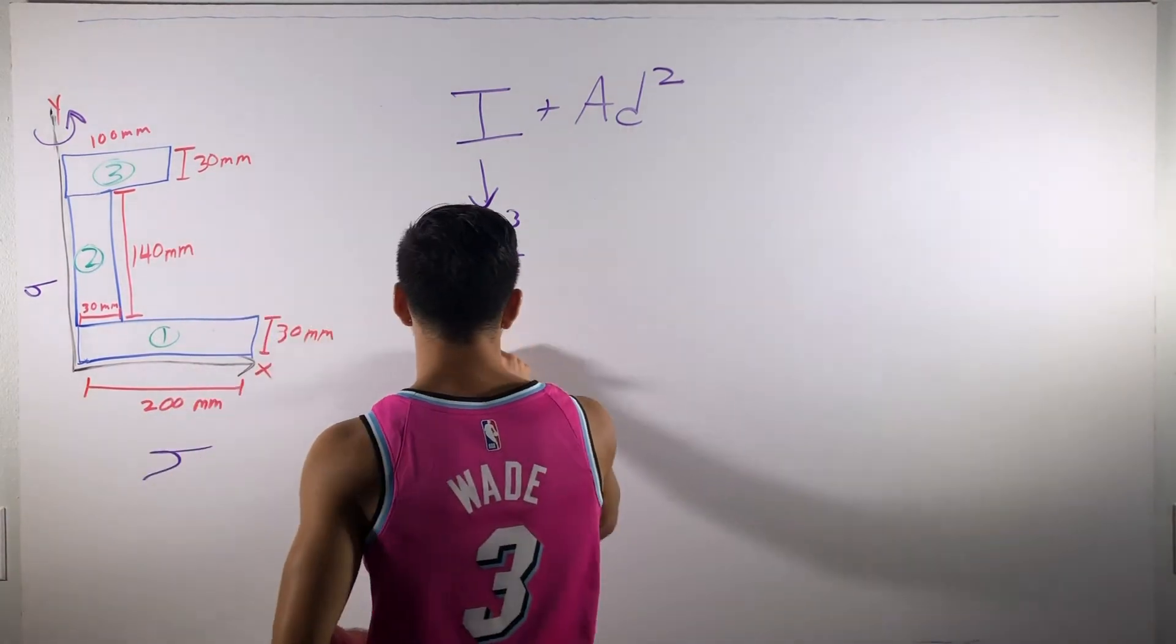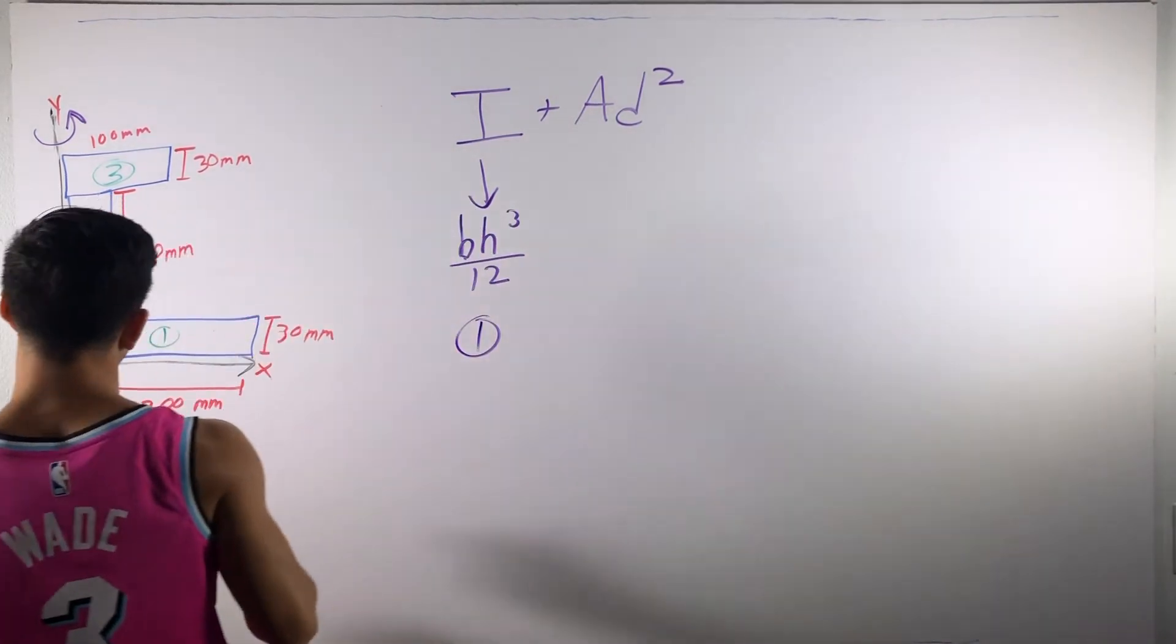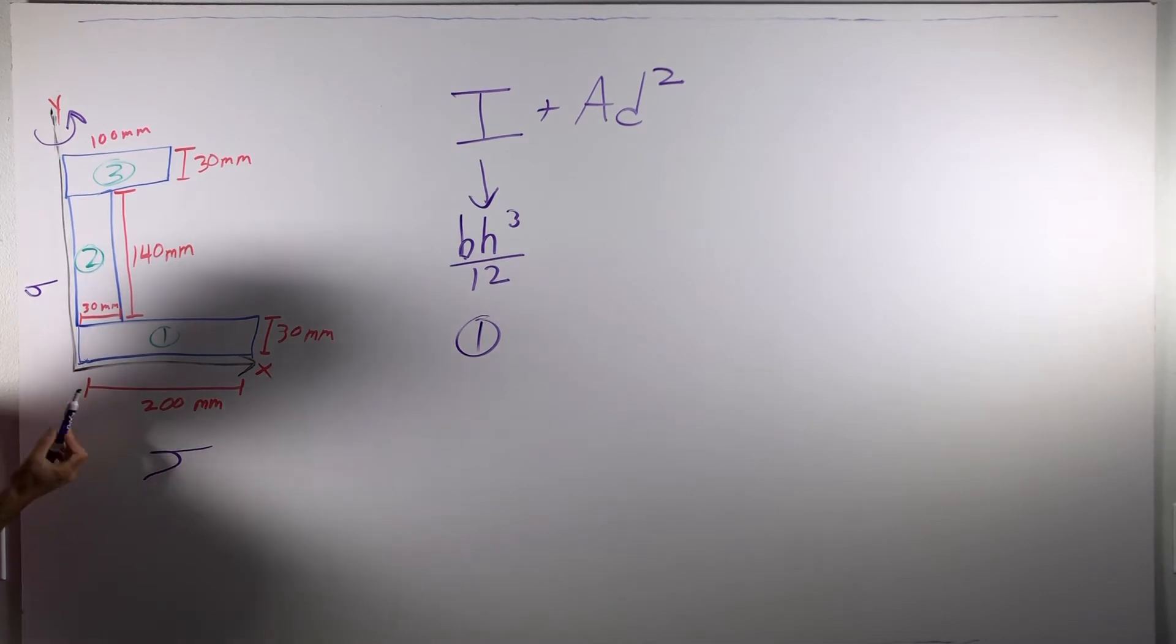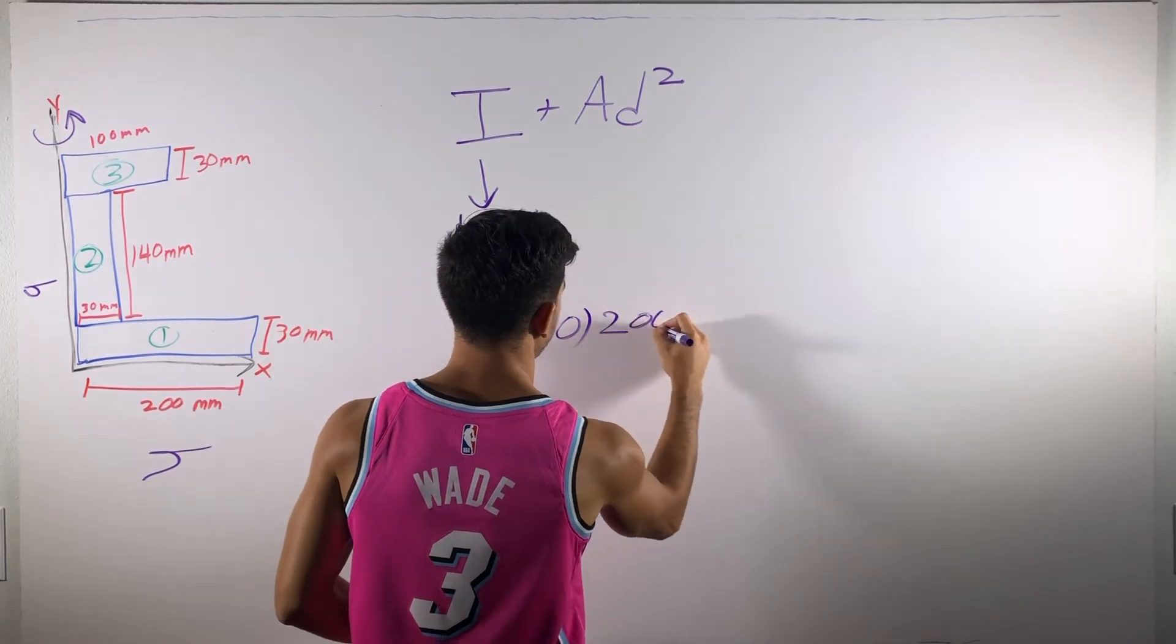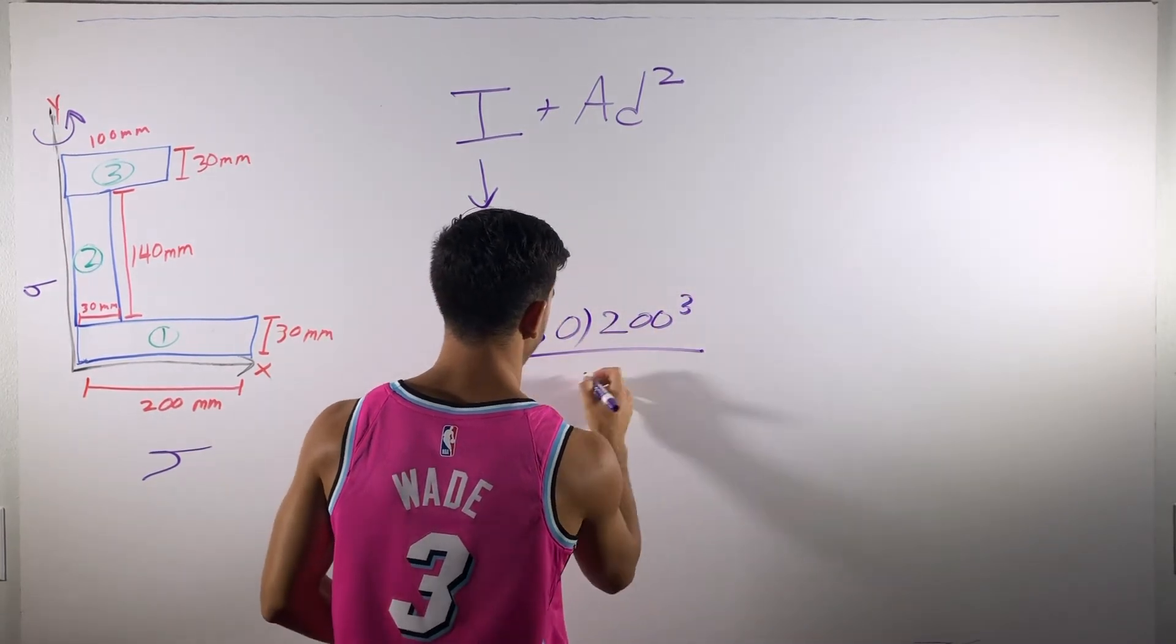Let's look at section one. The base of section one now is 30, and the height is 200. So, we're going to write that down as 30 times 200 to the third over 12.